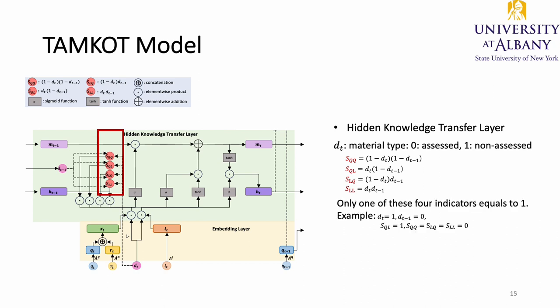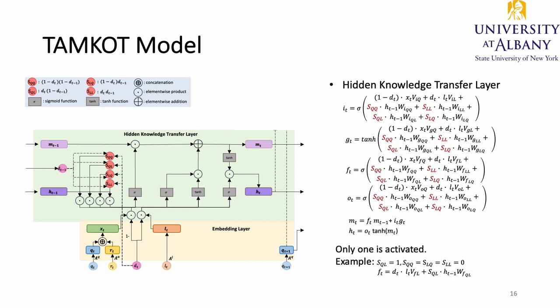At each time point, only one of these four indicators equals 1. For example, when a student interacted with a problem at time t-1 and watched a video lecture at time t, then DT equals 1 and DT-1 equals 0, so SLL and SQL both equal 0, but SQL equals 1, representing the student switching from question at t-1 to lecture at t. We then use these four indicators to activate the transition weight for each gate or cell. For each gate, only one transition weight is activated at each time. Using the forget gate as an example, if a student switches from question to lecture, only the transition weight of question-to-lecture WFQL is activated.